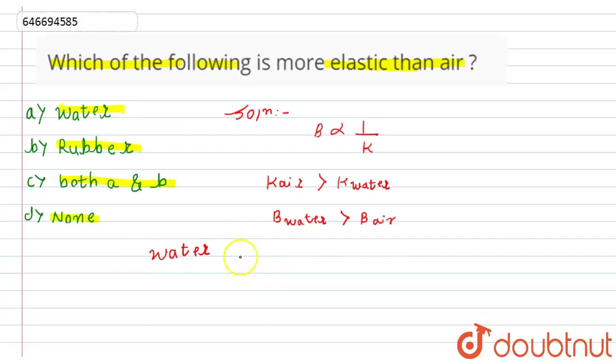If we talk about rubber and air, we know that air is more compressible compared to rubber. If it is more compressible, obviously its bulk modulus will be less compared to bulk modulus of rubber.